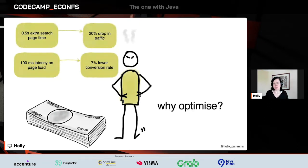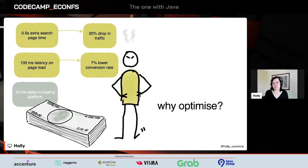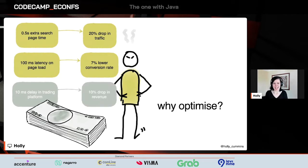Seeing these money numbers, we definitely care about performance — particularly if you're doing something like a trading platform. For high-frequency trading, a 10 millisecond delay — a tiny, tiny delay — turns into a 10% drop in revenue. A tenth of your business has just disappeared because of those 10 milliseconds. So if you want to fix those problems and those gaps, you need to get into optimizing.